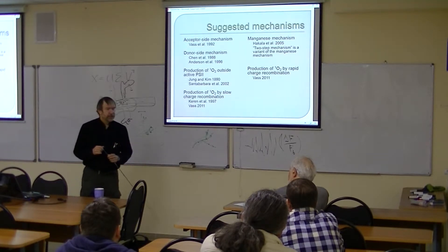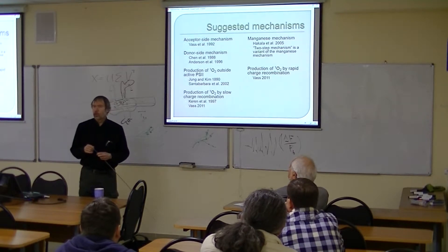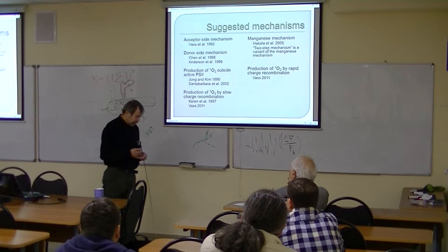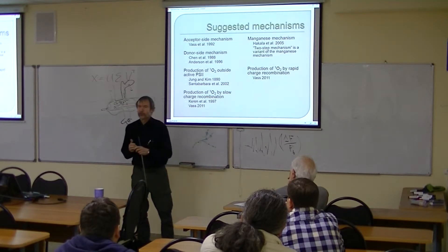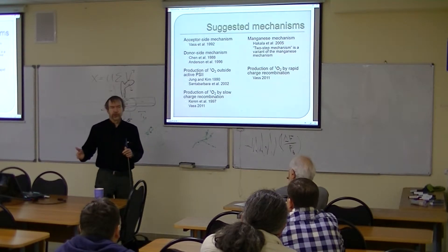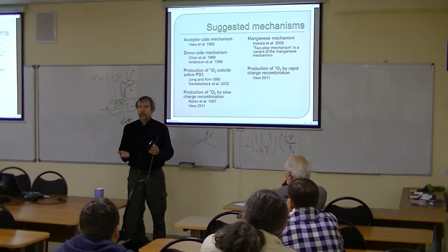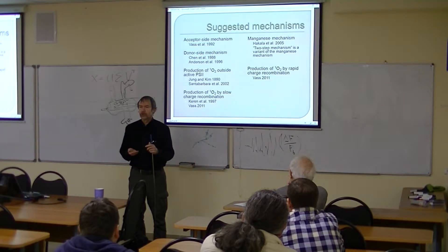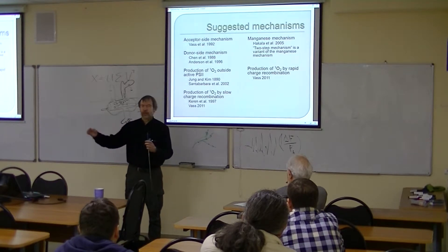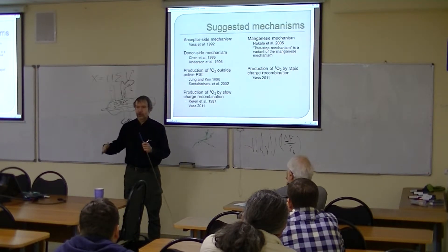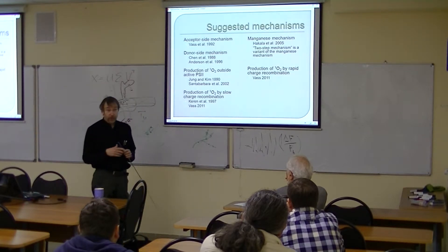The two-step mechanism stresses the idea that if you somehow destroy the manganese complex first, that will cause later damage to photosystem 2. I call this just a variant of the manganese mechanism and do not really want to call it two-step. First, there is a lot of evidence that photo-inhibition is a one-step, one-photon mechanism — we do not need two photons. Second, it seems that whatever happens to manganese is irreversible. If we have irreversible damage to the oxygen-evolving complex, whatever happens thereafter is beating the dead horse — it does not affect the kinetics of loss of activity if the activity is already lost in an irreversible way.